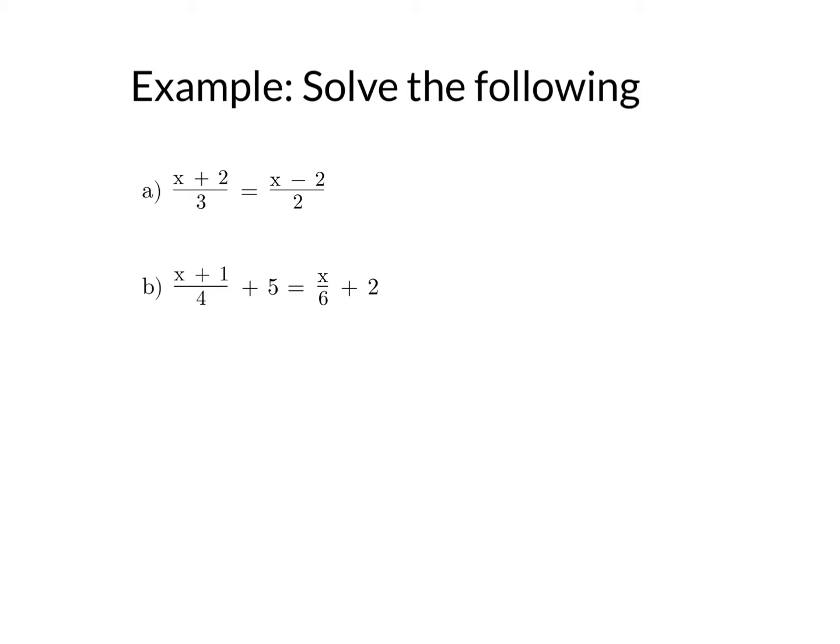The first one is x plus 2 over 3 equals x minus 2 over 2. And the second one is x plus 1 over 4 plus 5 equals x over 6 plus 2. So hopefully you're already thinking of common denominators for both of those.